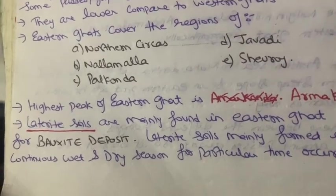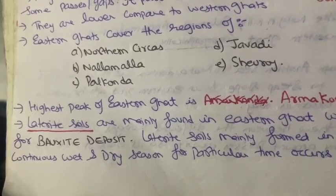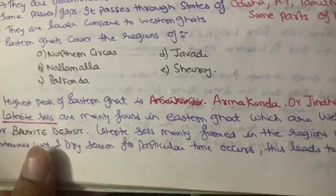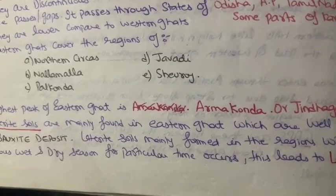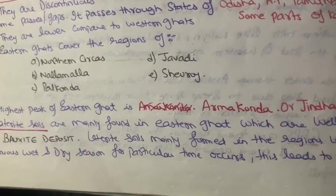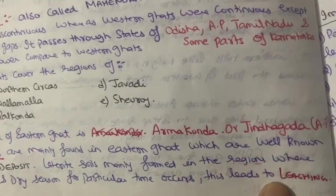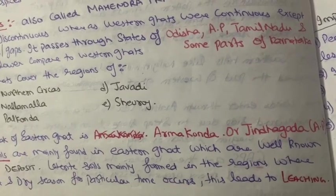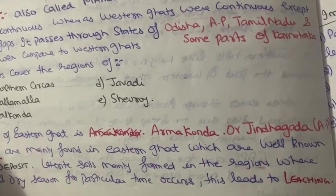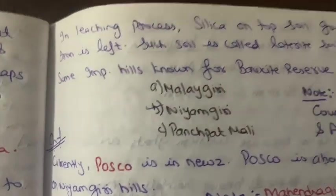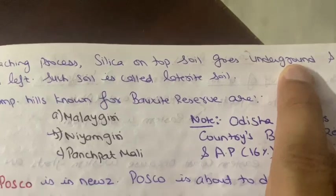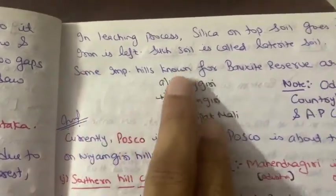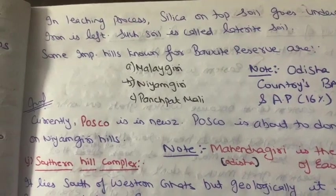In regions where the season alternates between wet and dry, laterite soil is formed. What happens is: minerals like iron and silica are available in the soil. During the wet season, when rainfall occurs, a leaching process takes place — rainfall takes away some minerals like silica from the topsoil down underground. After leaching, what remains is iron. This iron-rich soil is called laterite soil.